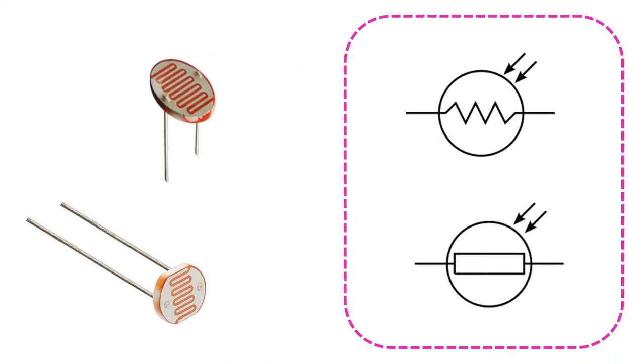The symbols here are used for the dependent resistor known with the abbreviation LDR, which stands for light-dependent resistor. LDRs are also known as photoresistors. They are circuit elements that show low resistance in the light and high resistance in the dark.